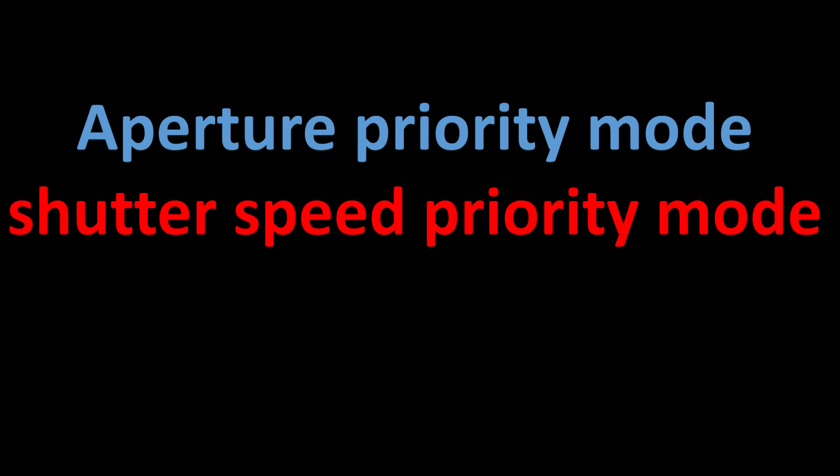For example, when we control aperture priority mode, we have the aperture change. We control aperture and ISO — we set the shutter speed and ISO. We control shutter speed and ISO. We set the aperture and ISO. First, aperture priority mode.